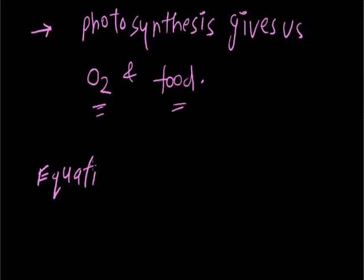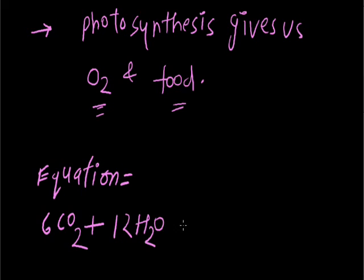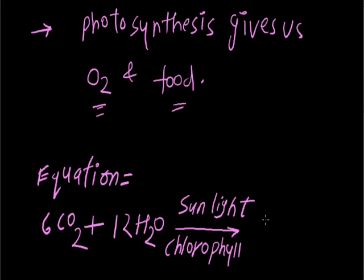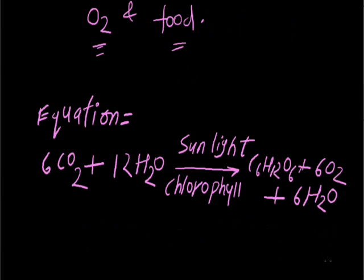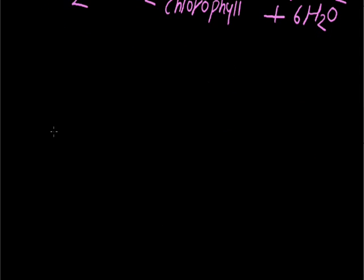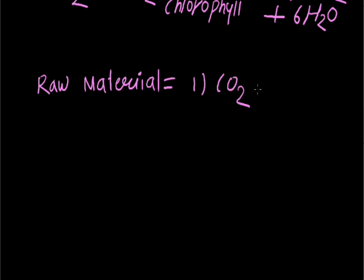Now, the equation of photosynthesis. There are 6 molecules of carbon dioxide, then 12 molecules of water, and in the presence of sunlight and chlorophyll molecules, what is synthesized? The food is synthesized — it means glucose, C6H12O6. Then 6 oxygen is released, plus 6 water molecules are generated in the metabolic process of photosynthesis. Now, if we talk about the raw material: these are CO2 and water.